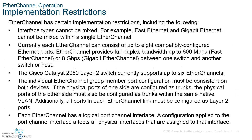Here are some restrictions to know. Interface types cannot be mixed — you can't have 100 megabits on one side and gigabit on the other. One EtherChannel can aggregate up to eight ports, full duplex. The 2960 switch can support up to six ports. The group of port members must be the same — for example, both sides must be trunks and must have the same native VLAN.